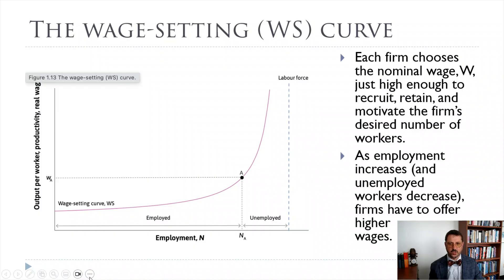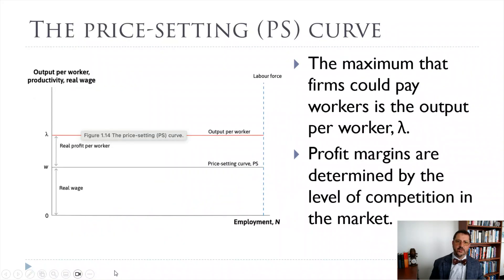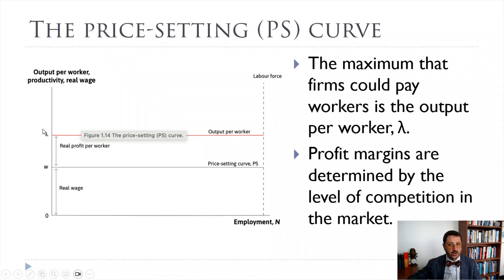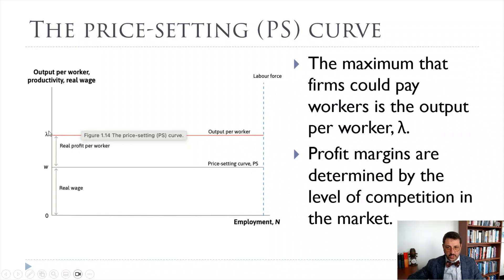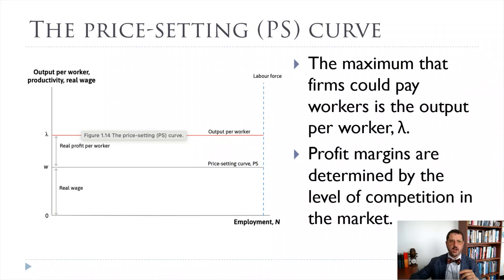Here's our wage setting. But this model is called the wage setting price setting model, so here is our price setting curve. Our price setting curve starts with output per worker — that's how much workers are producing on average in our economy. Then it subtracts out the average profit margin — the distance between lambda, our output per worker, and the real wage. That gives us our real wage. As we said before, that does not depend on employment, so those are just horizontal lines. The real wage is determined entirely by labor productivity, which depends on how much physical capital they have, how much technology they have, and how much human capital they have.